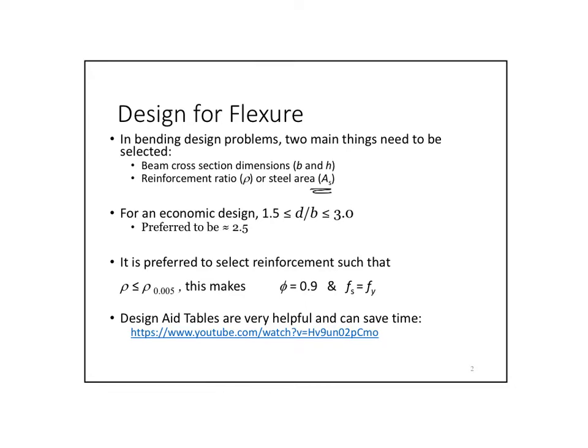So a lot of times what we do is we assume some sections, or we assume some dimensions of how it looks like. And how we start with is that, for the beam, how is the ratio between my B and my D? That ratio is very economic when it is between one and a half to three times. So your D should be about three times your B. Preferred to be about two and a half.